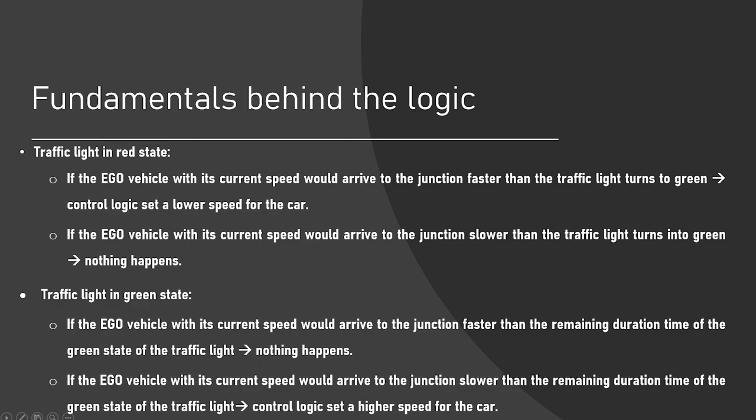But if we arrive slower than the remaining duration time of the green state, we have to set a higher speed of the car. But our control logic checks that with the maximum speed of the car, are we able to arrive in the perfect time to the junction or the intersection or not. Because if we are not able to arrive with the maximum speed to the signalized intersection before it turns into red, we don't want to set a higher speed of the car because we will have to stop at the signalized intersection too.